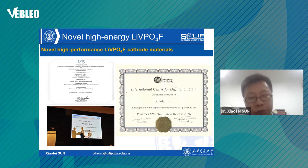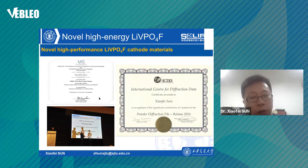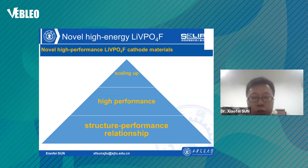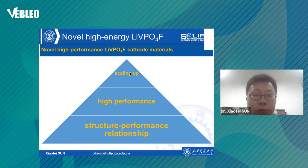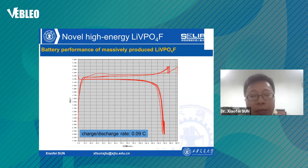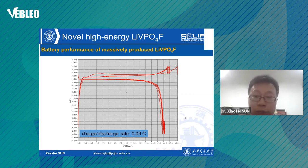ICDD used this in the powder diffraction file, and our work has been awarded the best poster award — with Nobel laureate Alan Heeger delivering the certificate. High-performance lithium vanadium fluorophosphate is prepared by understanding the deep structure-performance relationship, especially defects in the crystal structure. They are now being scaled up for medium-scale production. This is a typical charge-discharge curve of massively produced material — pretty competitive with high capacity and high voltage, and so is the energy density. We can produce such materials in hundreds of kilograms per batch.